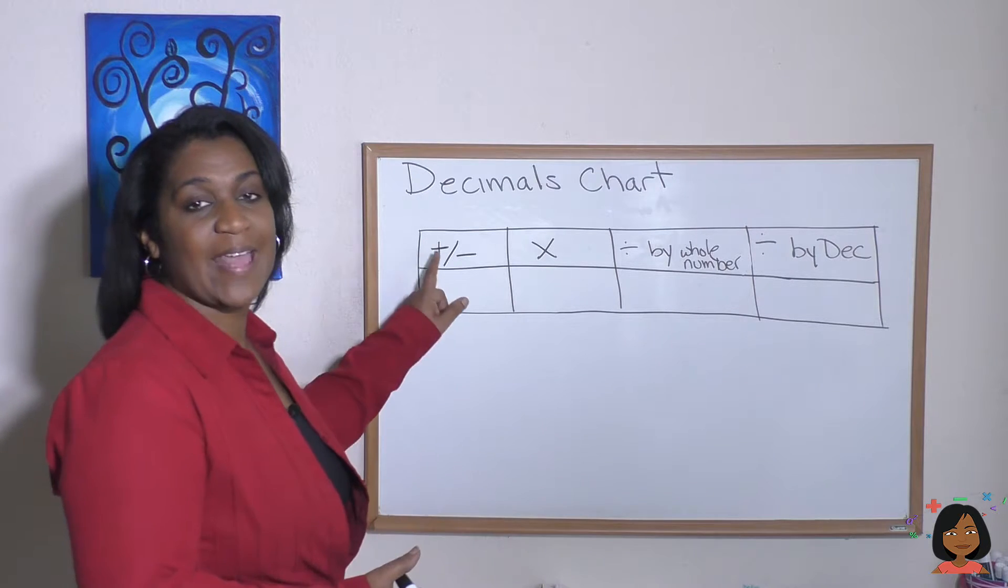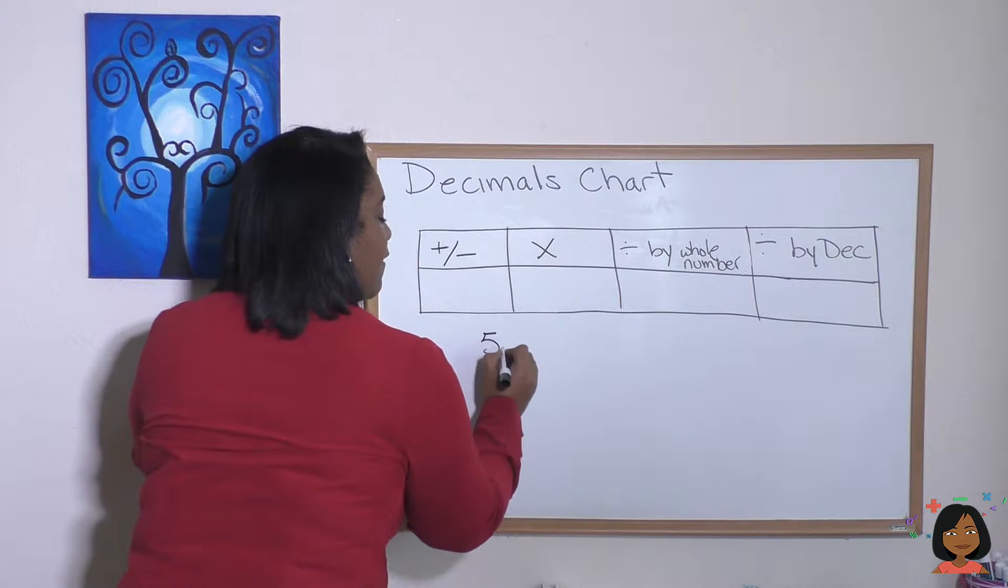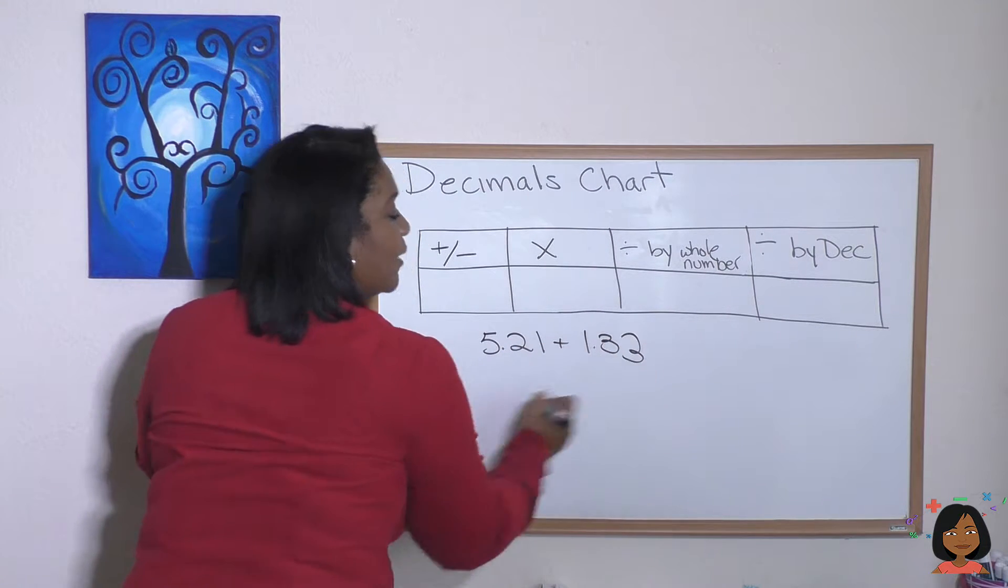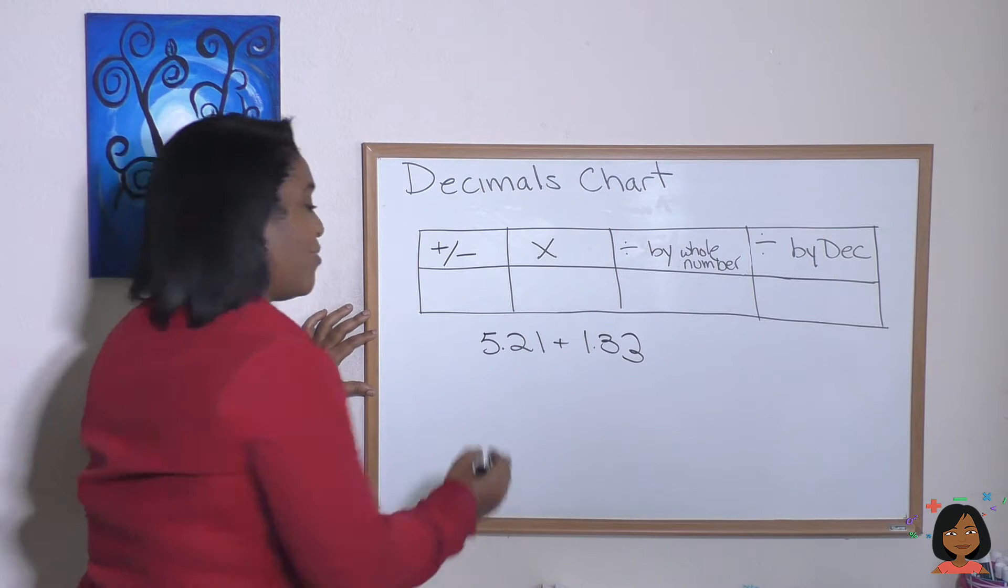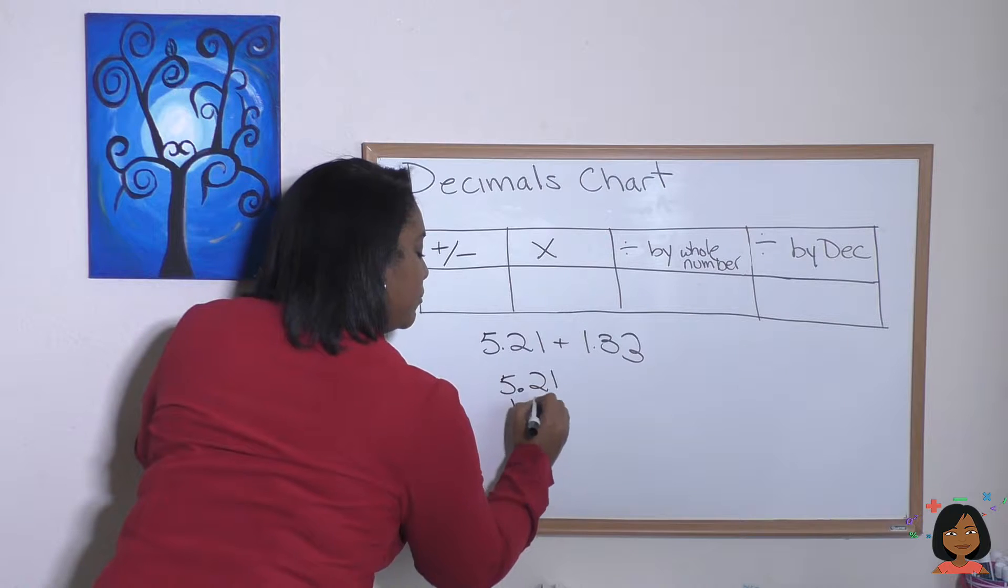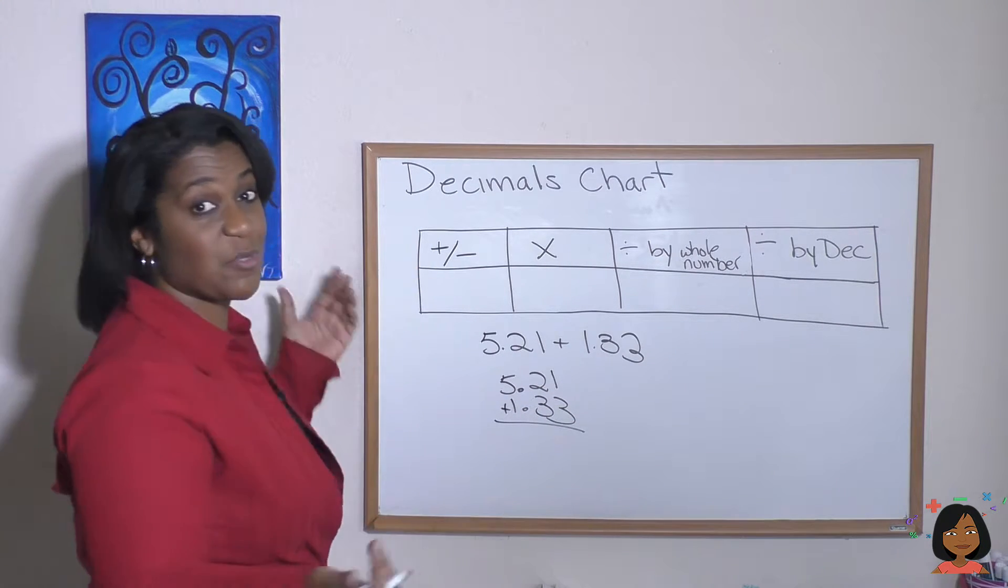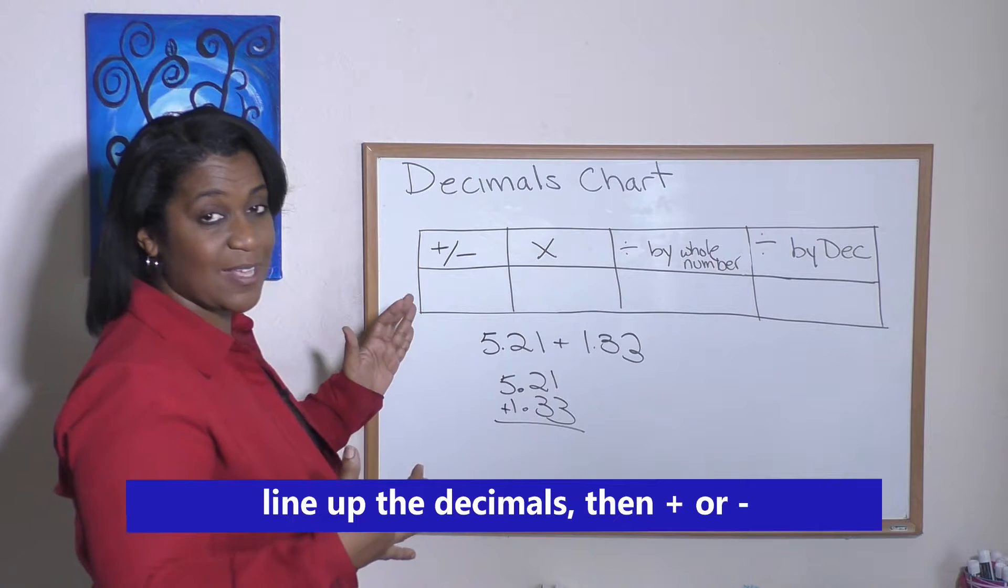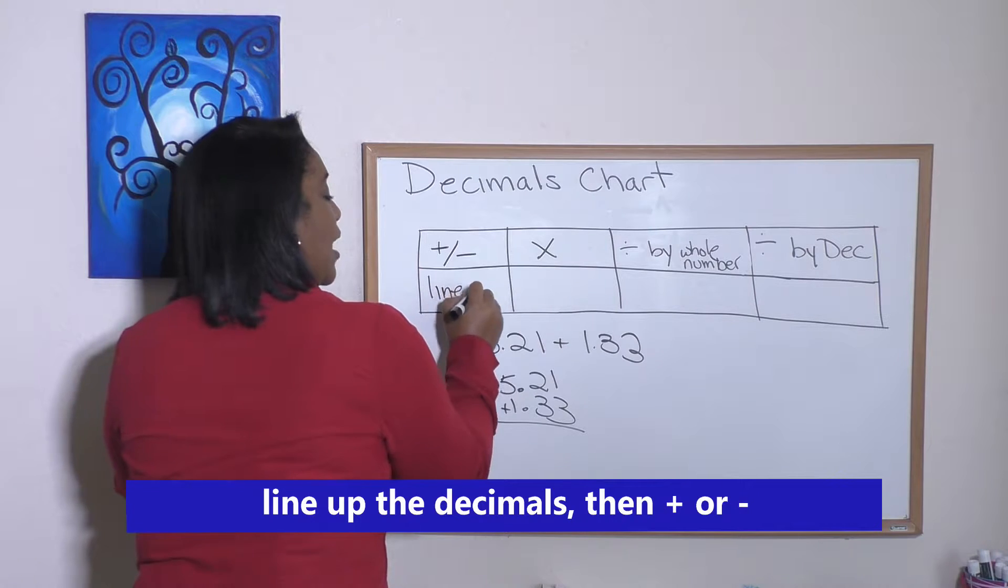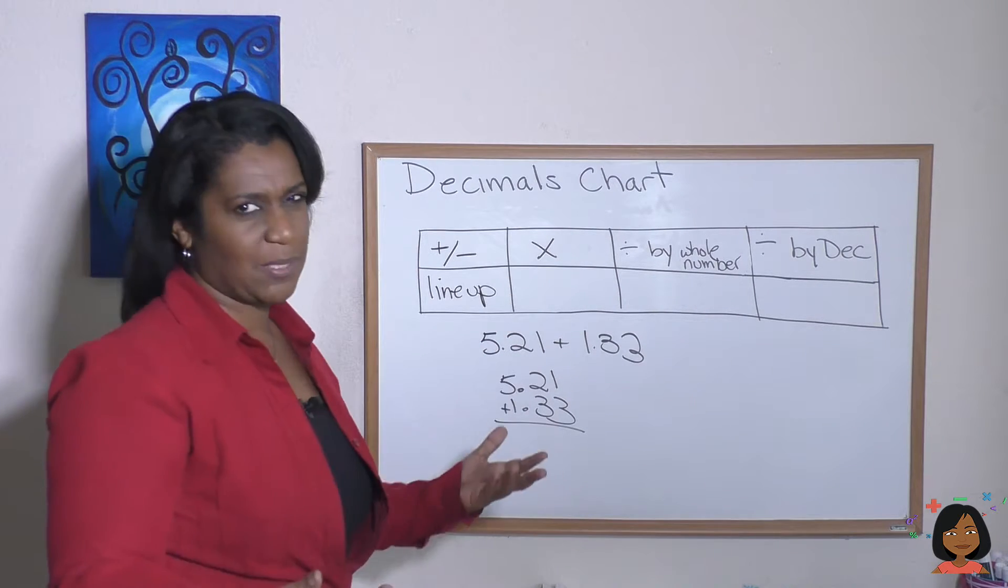When we're adding or subtracting decimals, what do we do? If I have 5.21 plus 1.33, I would rewrite it and line up my decimals, then add. So that's the rule: line up your decimals and then add or subtract. I'm going to write in here 'line up.' What about multiplication?